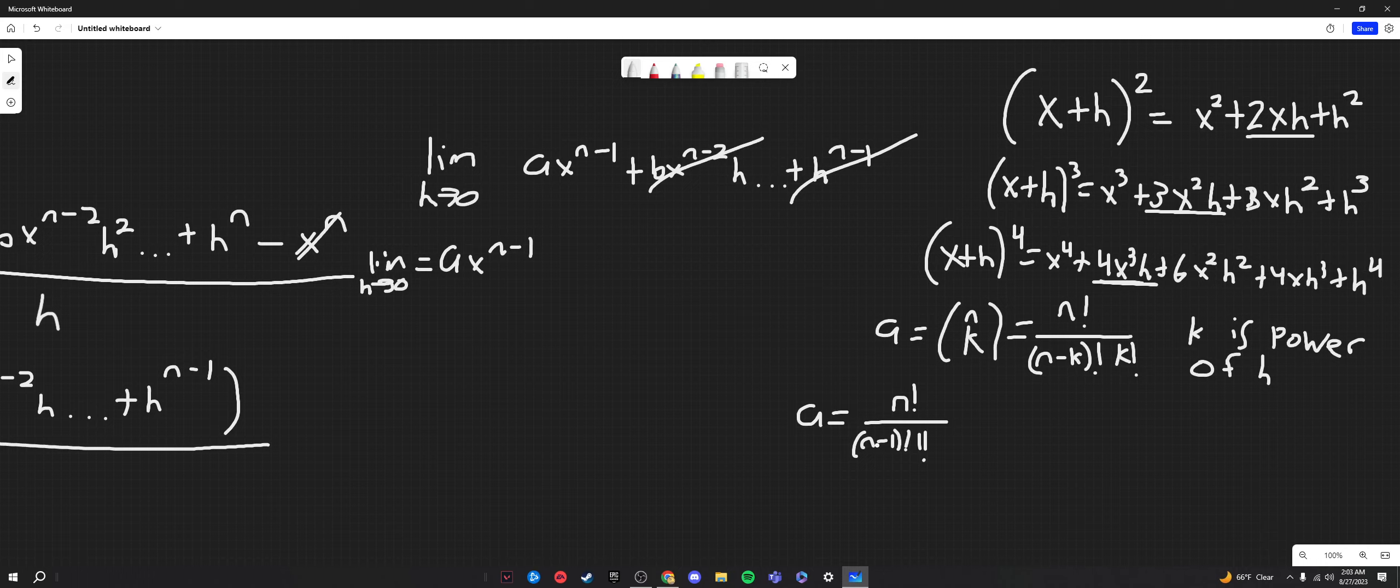Of course, since n factorial is all the integers down from n multiplying by each other, taking 1 out means you would just have the integer before n taking its factorial and then multiplying it by n to get n factorial. So these n minus 1 factorials cancel out, and we're left with just n. Therefore, a is just equal to n.